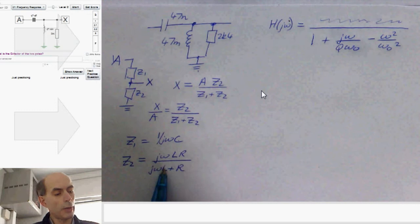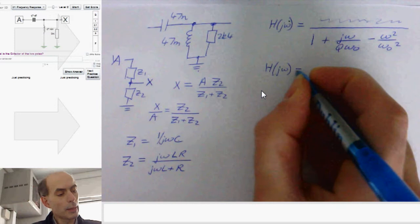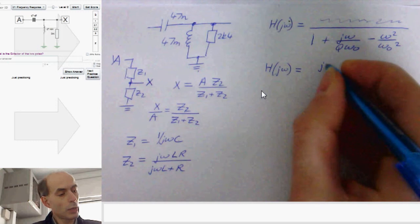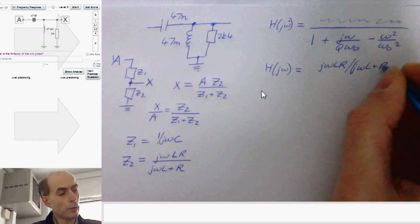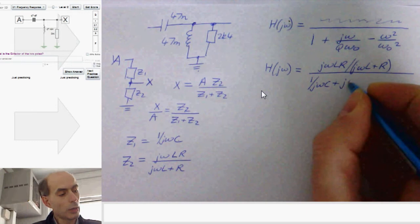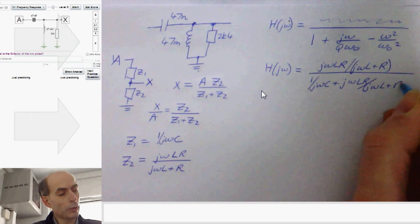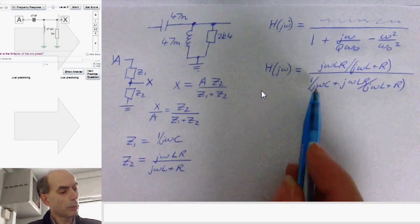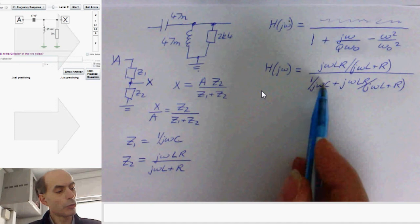Therefore, our H of jω here has the form of z2, which is jωLR divided by jωL plus R, divided by z1 plus z2, which is 1 over jωC plus jωLR divided by jωL plus R. And the first step with almost all of these things is to multiply by any term with a jω in it that appears on the bottom of anything.